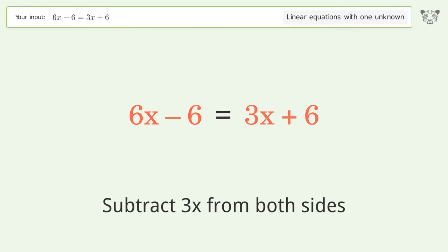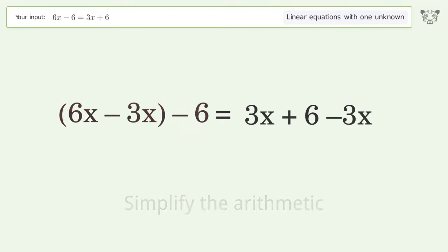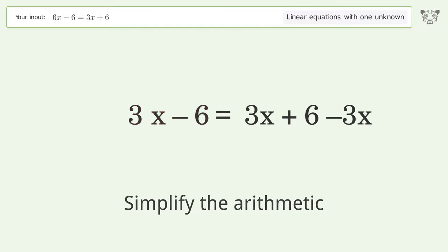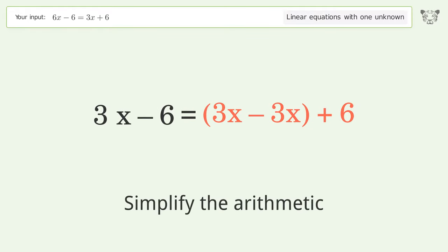Subtract 3x from both sides. Group like terms and simplify the arithmetic. Group like terms again and simplify the arithmetic.